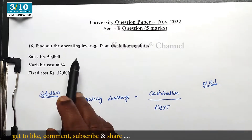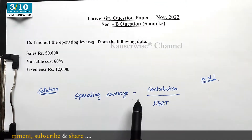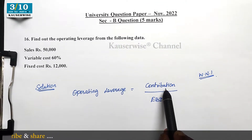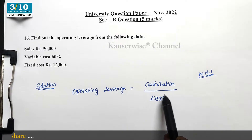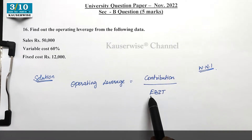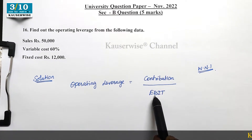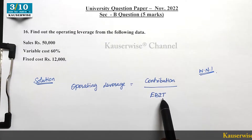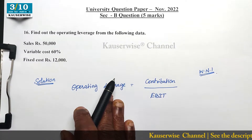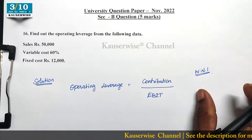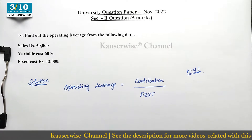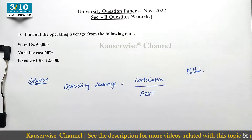They are asking us to calculate operating leverage. The formula for that is: contribution divided by EBIT, where EBIT means earnings before interest and tax. Before applying the formula, first you have to do the calculation of profit with the help of a marginal costing statement.